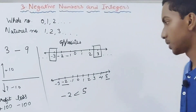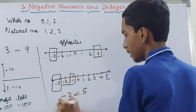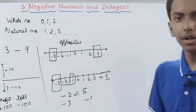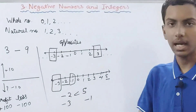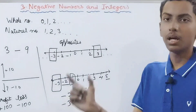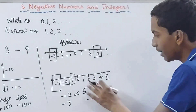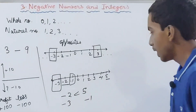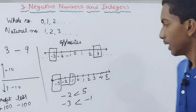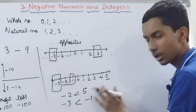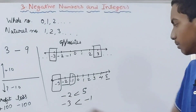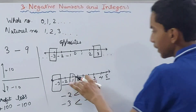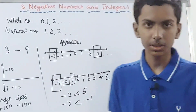Now compare minus 3 and minus 1. In whole numbers, the greater number has more value, but in negative numbers it's the opposite — minus 1 is greater than minus 3. The smaller-looking negative number has more value than the larger-looking one. So this is how we compare negative integers. Remember: all positive integers are greater than negative integers, and 0 is greater than all negative integers but smaller than all positive integers.